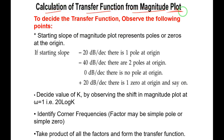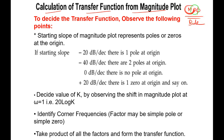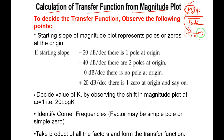How to calculate the transfer function from a magnitude plot? The magnitude plot is part of the Bode plot, which consists of both magnitude and phase plot. Suppose we are given the magnitude plot — this is a reverse process. If we have the transfer function, we can draw the magnitude plot. Now we want to go the other way: given the magnitude plot, find the transfer function.